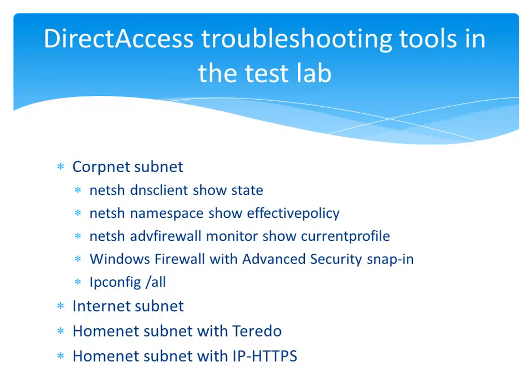Netsh advfirewall monitor show current profile shows the list of connected networks and their determined firewall profiles. The Windows Firewall with Advanced Security snap-in shows us the currently active connection security rules and IPsec SAs. And ipconfig /all shows the complete TCP/IP configuration including both IPv4 and IPv6 settings. We then connect Client1 to the internet subnet and run these commands again, showing the contrast in configuration — mainly that when off the corpnet subnet, we now have active rules in the NRPT and active connection security rules in IPsec SAs.